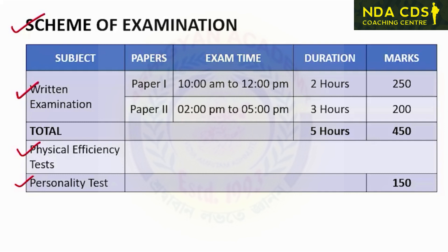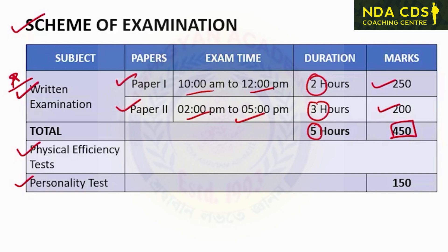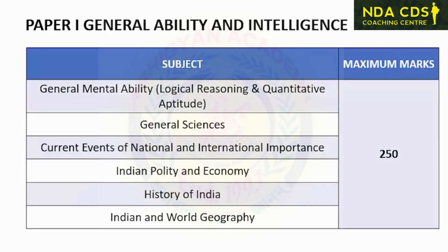Talking about the written examination, there will be two papers. Paper 1 will be conducted from 10 AM to 12 PM, which is 2 hours, and the total marks allotted to Paper 1 is 250. Paper 2 is from 2 PM to 5 PM, a three-hour test, and the marks allotted for Paper 2 is 200. The total duration for the examination is 5 hours and the total marks for both papers is 450.